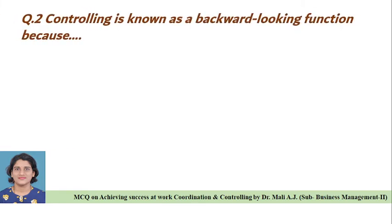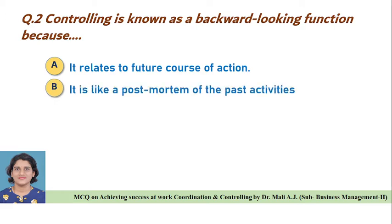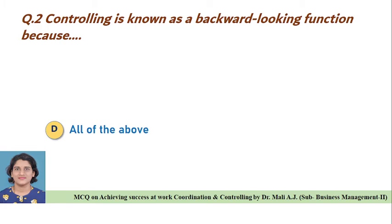Question two: Controlling is known as a backward looking function because — Option A: it relates to future course of action, Option B: it is like a post-mortem of the past activities, Option C: it monitors selected actions, Option D: All of the above. Correct answer is Option B, it is like a post-mortem of the past activities.